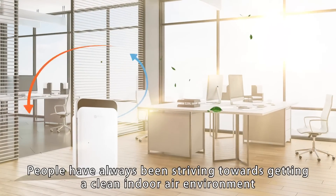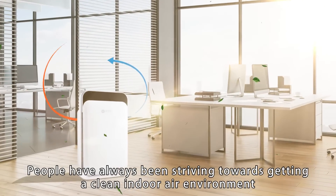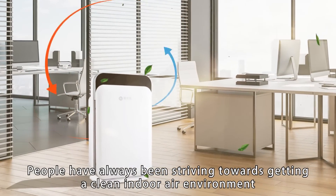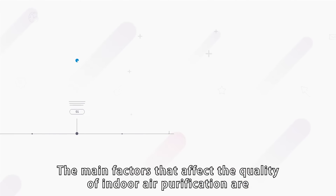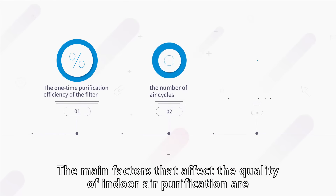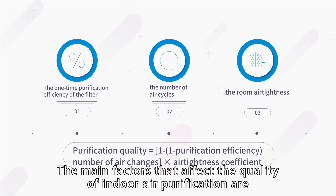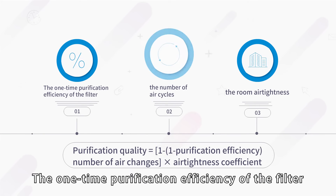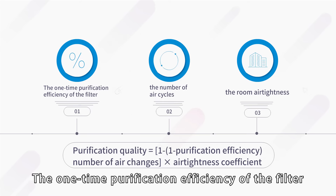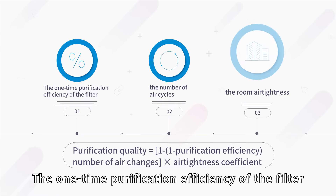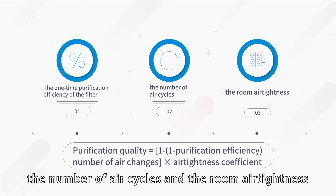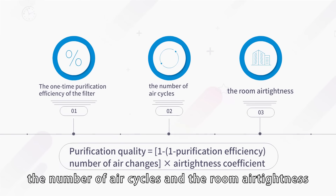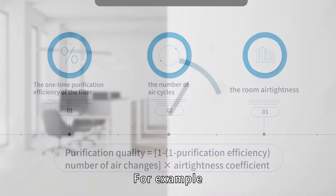People have always been striving towards getting a clean indoor air environment. The main factors that affect the quantity of indoor air purification are the one-time purification efficiency of the filter, the number of air cycles, and the room air tightness.